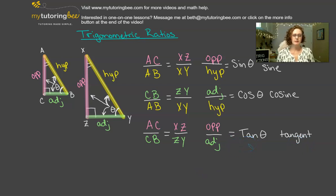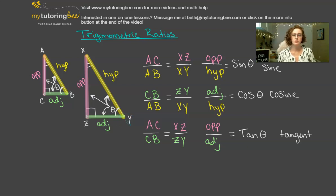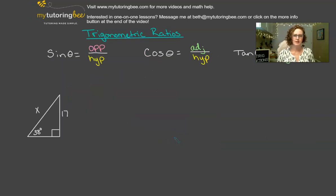These are basically just ways to help us determine the unknown lengths of sides of triangles, when we know at least one side of the triangle and one measurement of one of the other angles in a right triangle. And again, these are for right triangles. Let's take a look at an example so that we can actually practice using sine, cosine, and tangent.